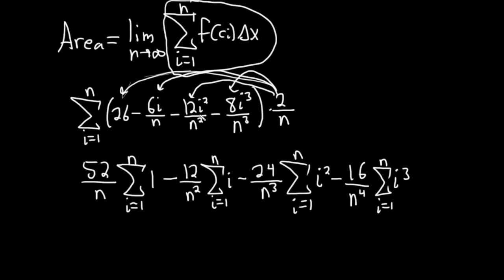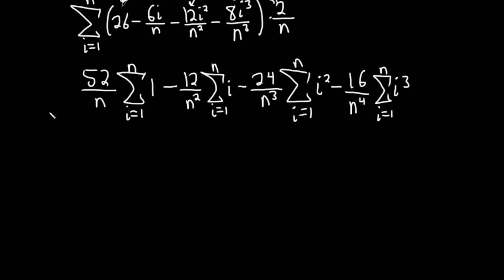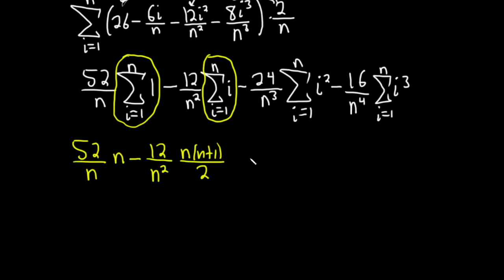So all we have to do now is take the limit, but we still have these sums here. Let's apply the formulas. This is like the ultimate problem because it requires all the formulas typically found in the calculus book. So this is 52 over n. This one is just going to be n. So n minus 12 over n squared. This one is n times n plus 1 over 2. Minus 24 over n cubed. This one is n times n plus 1 times 2n plus 1 over 6. And then minus 16 over n to the fourth. This one's n squared times n plus 1 squared over 4.